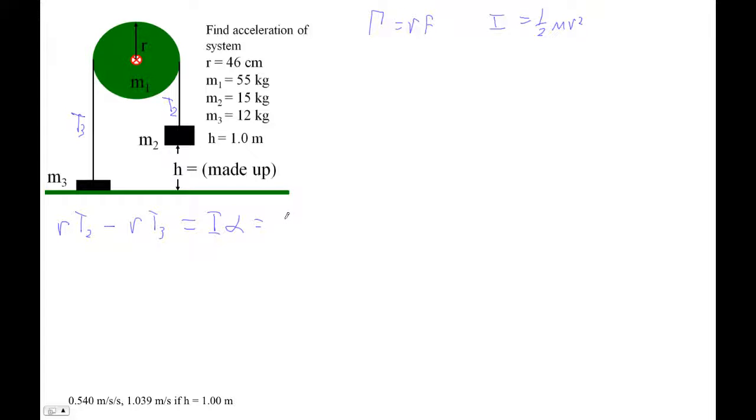I'm pretty sure this will make you want to use energy. But let's go for it. Let's do dynamics here. So that equals 1 half M1 R squared, times A over R. The other substitution, if A is alpha R, then alpha is A over R. Now I can clean this equation up a little bit. That R cancels that one. And then I can divide every term by R. And we end up with T2 minus T3 equals 1 half M1 A.